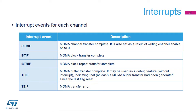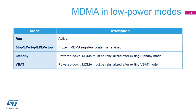For each MDMA channel, an interrupt can be produced on the following events: channel transfer completed, block transfer completed, block transfer repeat completed, buffer transfer completed, or transfer error. The MDMA is active in run mode. In the various stop modes, the MDMA is stopped and the contents of the MDMA registers are retained. The MDMA is powered down in standby and VBAT modes, and the MDMA registers must be reinitialized after exiting these modes.